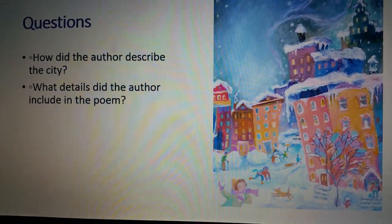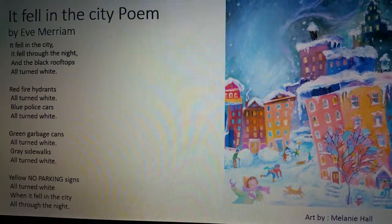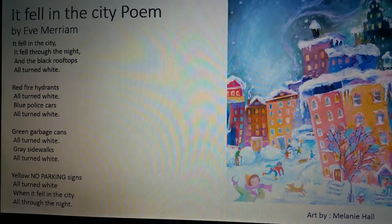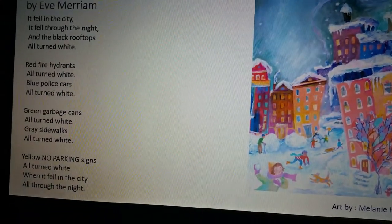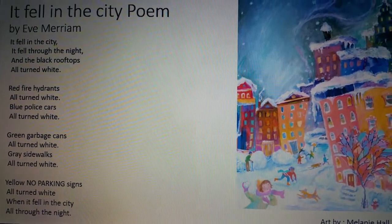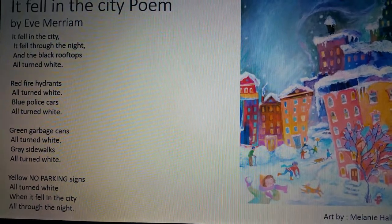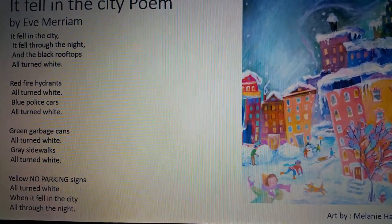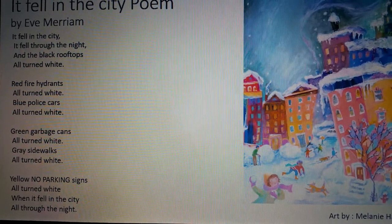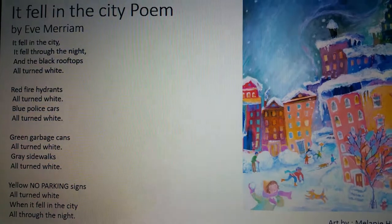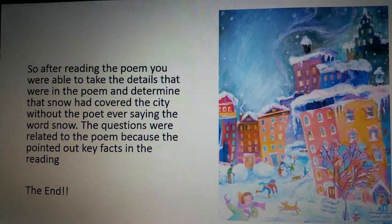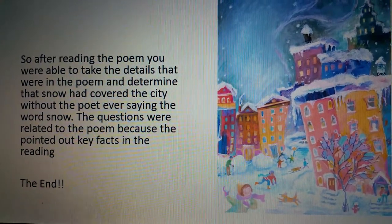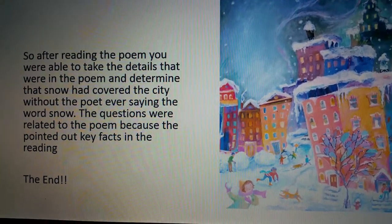What details did the author include in the poem? The author included that whatever fell, fell through the night and turned everything to white. Now, what falls from the sky and turns things to white? I think it would be snow. The author explained snow falling from the sky by expressing what color it turned everything in the city. After reading the poem, you were able to take the details in the poem and determine that snow had covered the city without the poet ever saying the word snow.